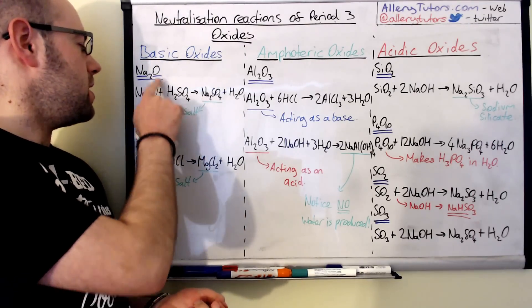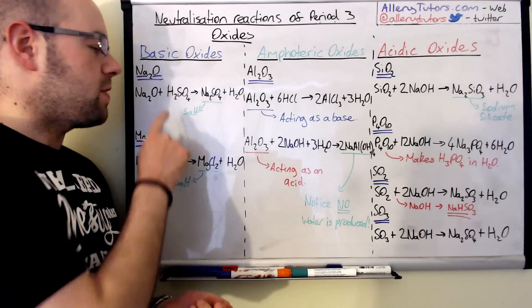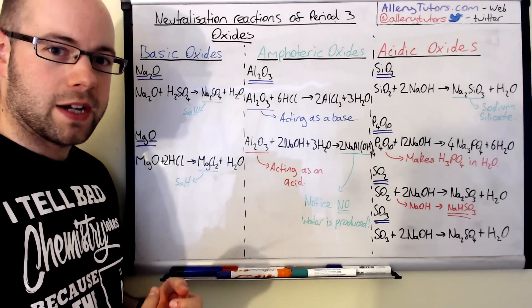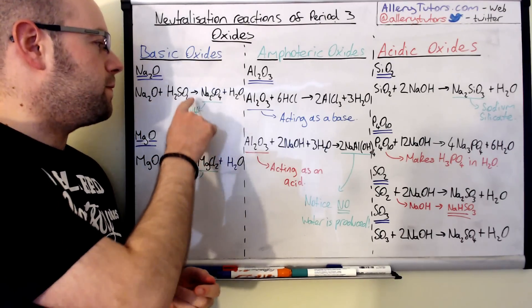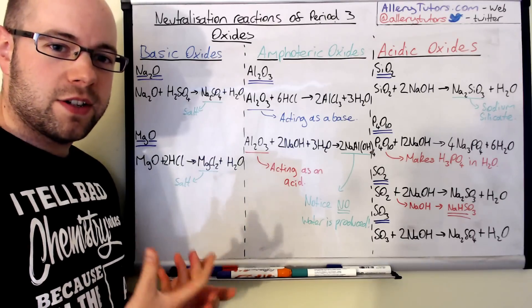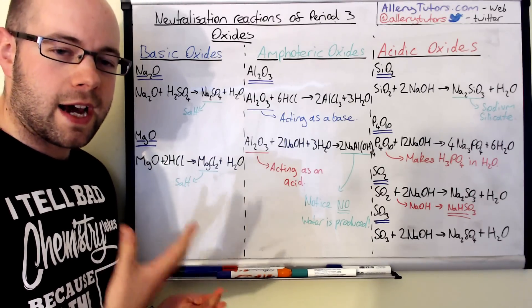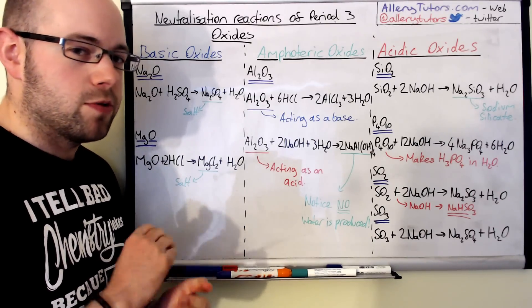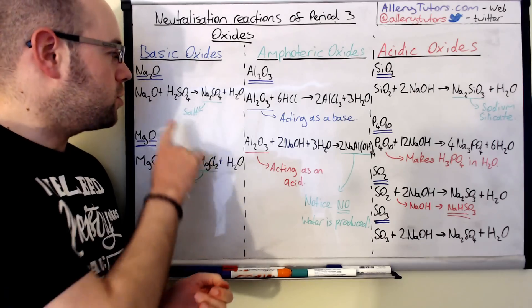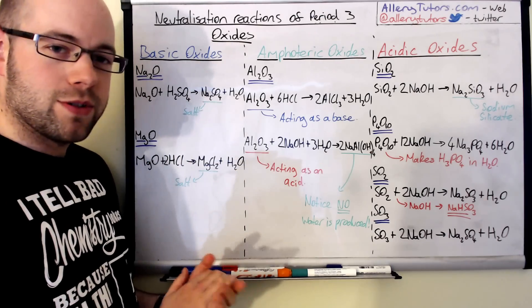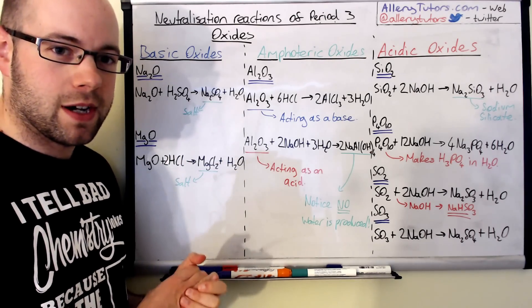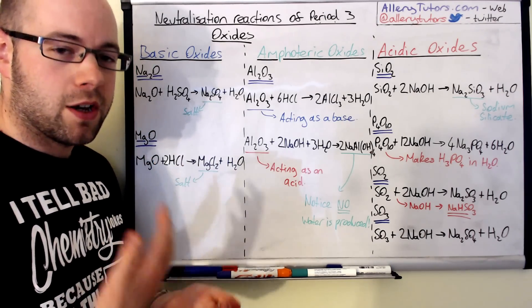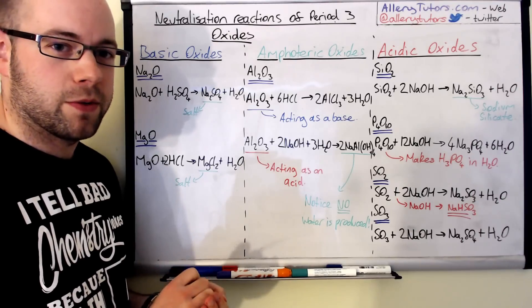So we've got sodium oxide, and we're going to react that with, for example, sulfuric acid, and we form a salt plus water. This is just a standard acid-base reaction, nothing too complicated. Just make sure your formulas are correct — they might not just ask about sulfuric acid; it could be hydrochloric as well.